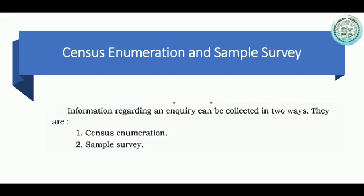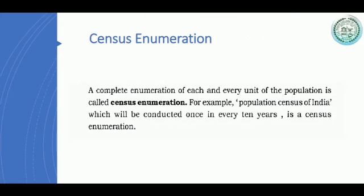Information regarding an enquiry can be collected in two ways: census enumeration and sample survey. Census enumeration is a complete enumeration of each and every unit of the population. For example, the population census of India, which is conducted once every ten years, is census enumeration. When you collect information from each and every person, that is known as census enumeration.